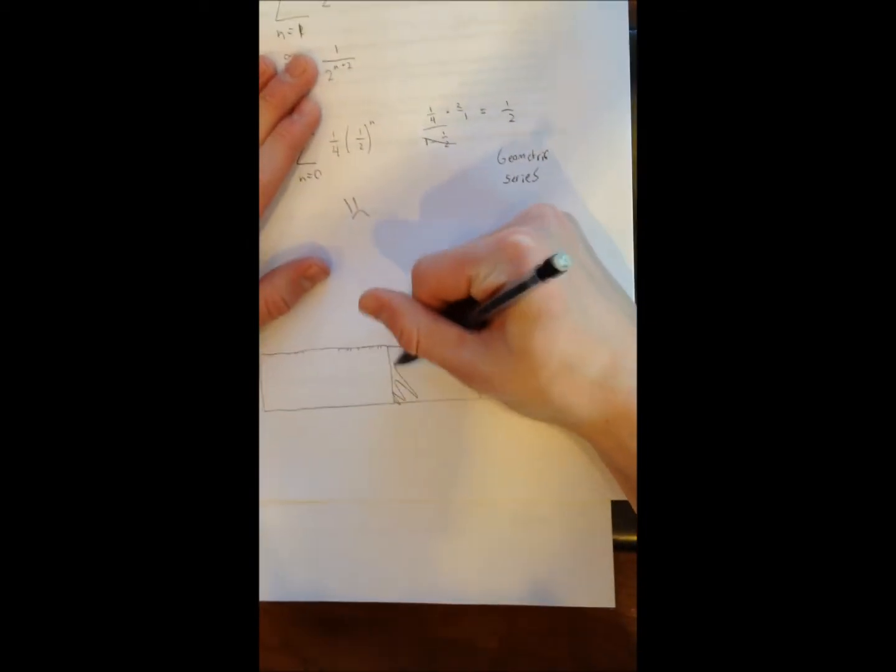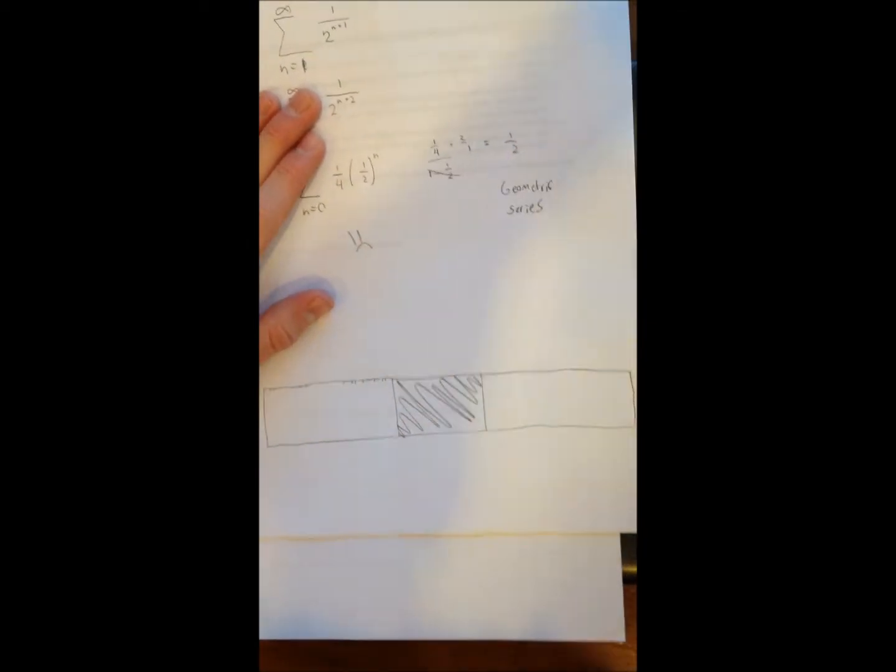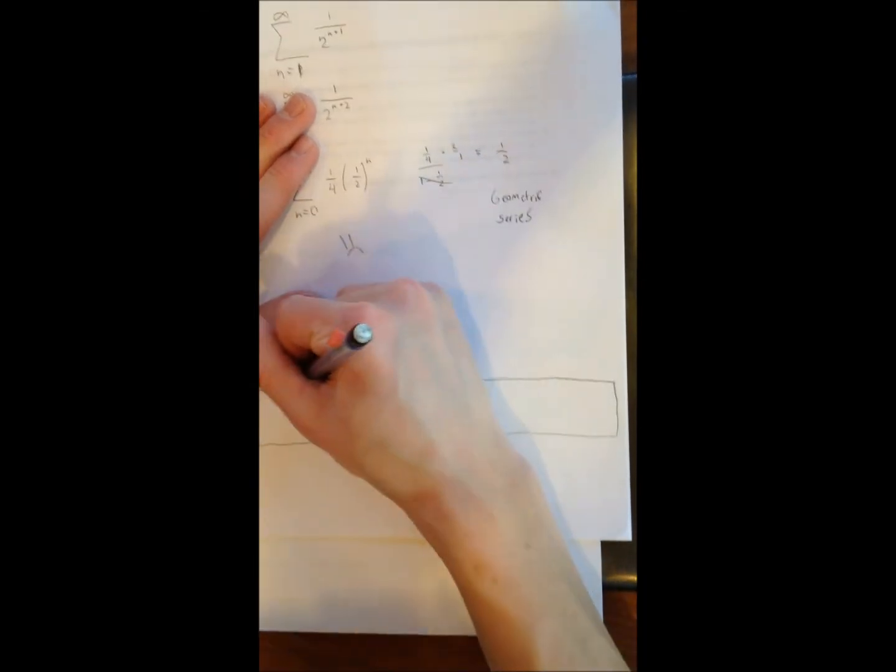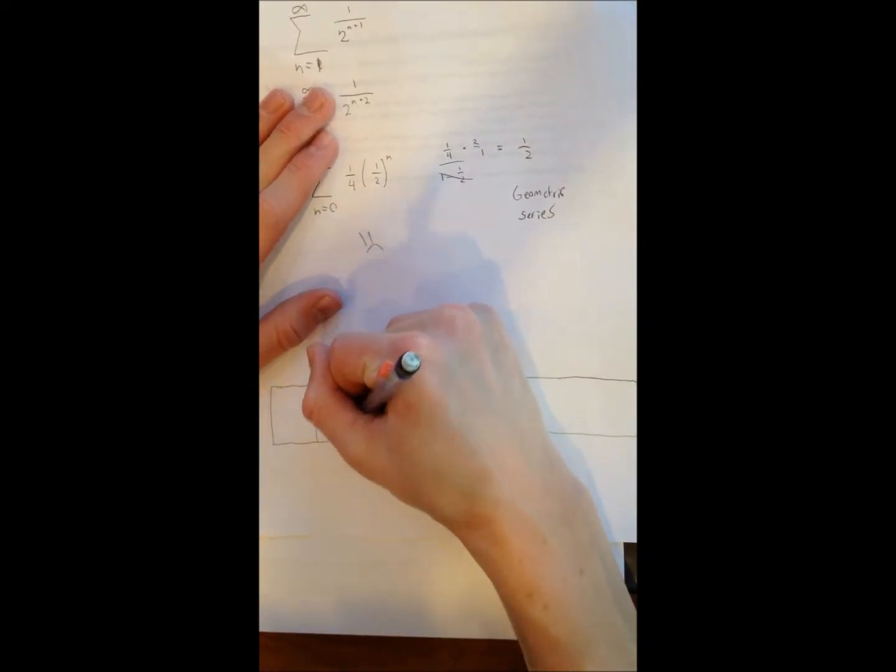So visually, what that looks like is we remove the 1 fourth, and then we're assuming that it's repeated on this side, but we remove another 1 fourth.